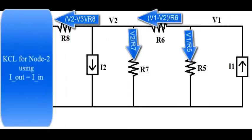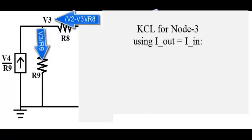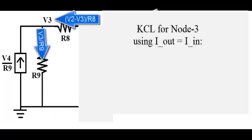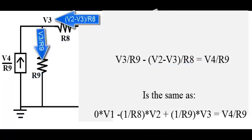Kirchhoff's current law for node 2 using I out equals I in. Please pause and confirm. Kirchhoff's current law for node 3 using I out equals I in is the same as this version.